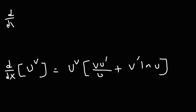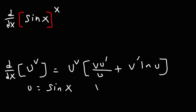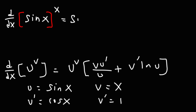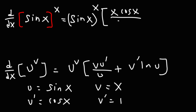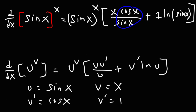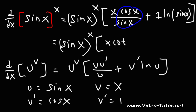Let's do one more: find the derivative of sine x raised to the x. We're going to make u equal to sine x, v is going to be x. u prime is going to be cosine x, v prime is going to be 1. So u to the v is the original problem, sine x raised to the x, times v times u prime: v is x, u prime is cosine x, over u, which is sine x, plus v prime, which is 1, times ln u, where u is sine x. Now cosine over sine we can write as cotangent. So the final answer is sine x raised to the x, times x cotangent x, plus the natural log of sine x.